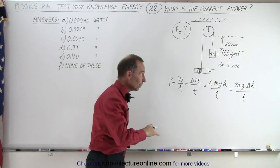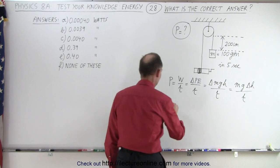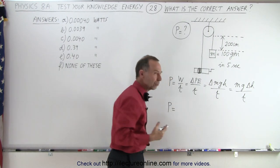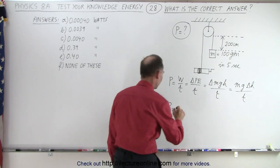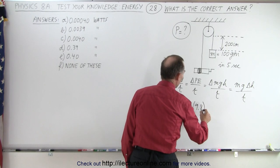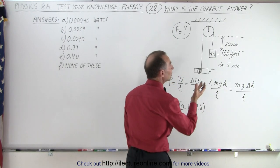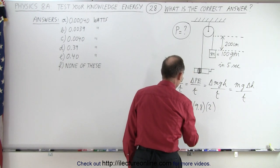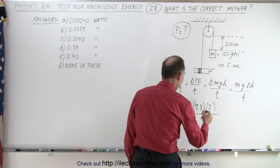So let's go ahead and plug in the numbers, but we need to convert to make sure we have it correct. The power is equal to the mass 100 grams, which is 0.1 kilograms. G is 9.8. The change in the height is 2 meters, 200 centimeters is 2 meters, so that would be times 2, and the whole thing divided by 5 seconds.